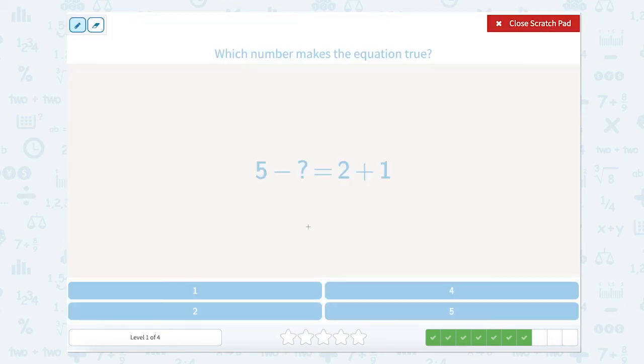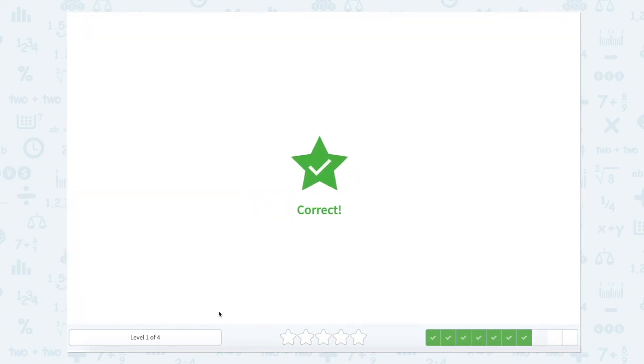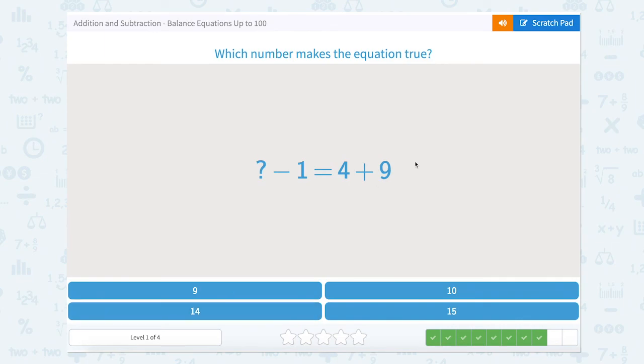Again we have an equal sign that has two sides, one side here, one side here. This side has two numbers we can solve for. 2 plus 1 equals 3. So 5 minus something equals 3. Well, if I have 5 and I take away 2, that would give me 3. So close that scratch pad, click 2, and let's keep going.